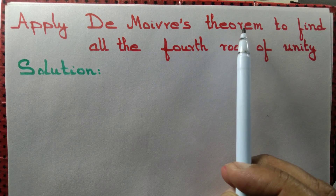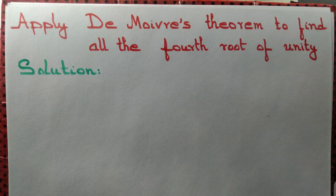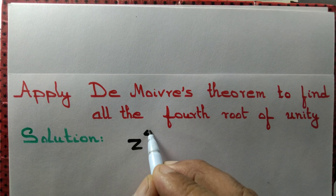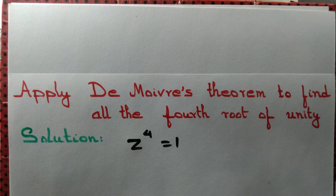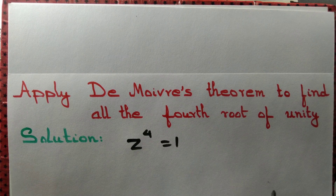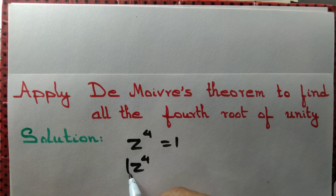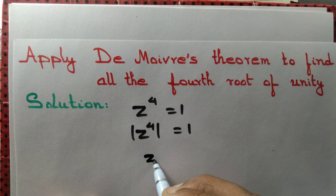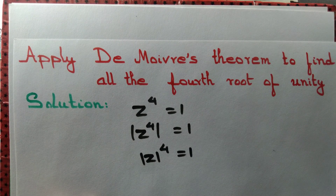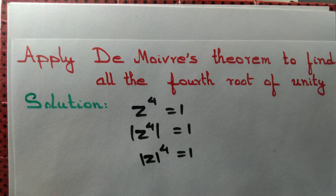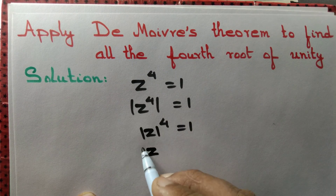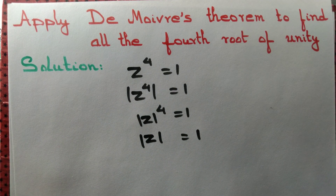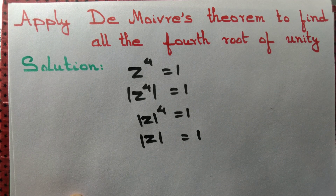Let us apply De Moivre's theorem to find all the fourth roots of unity. We want to solve the equation z to the power 4 equal to 1. First step: apply modulus on both sides. Modulus of z to the power 4 equals 1, which gives us mod z to the power 4 equal to 1, therefore mod z equal to 1.